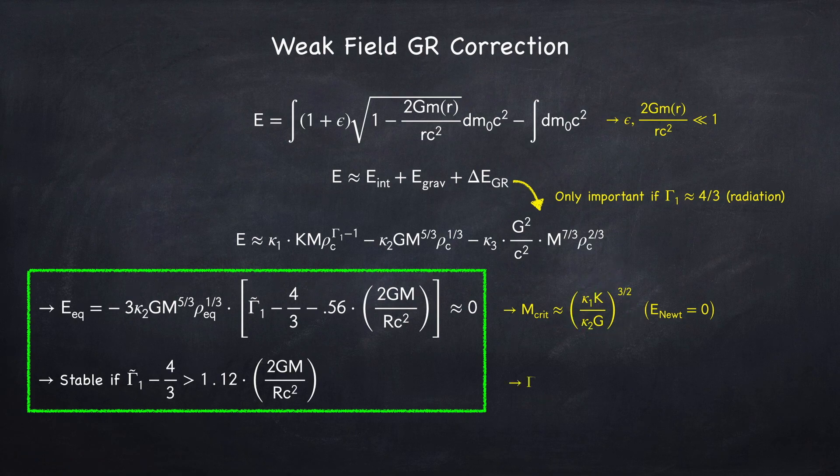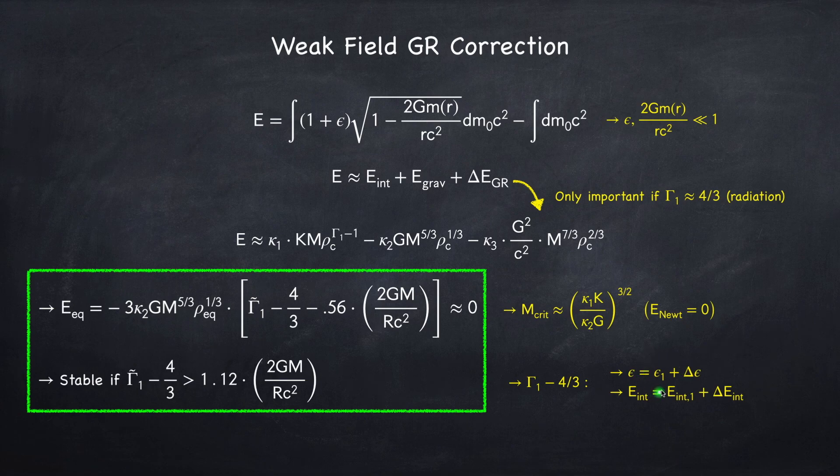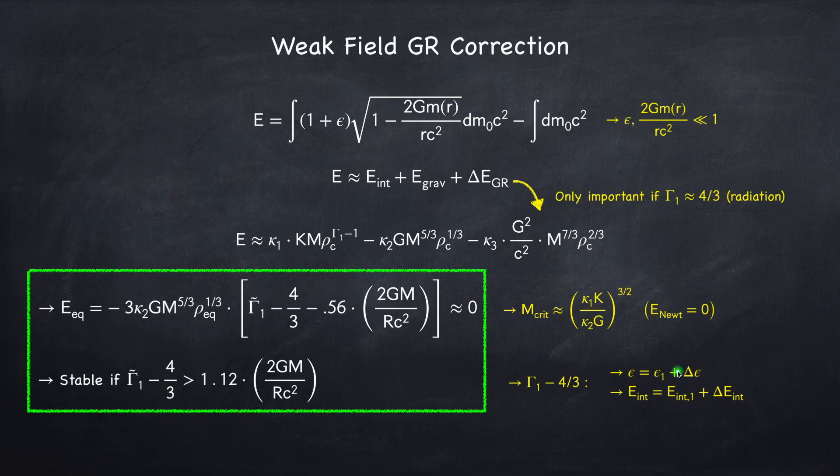As for gamma 1 minus 4 thirds, in order to find its exact value, we have to expand the internal energy into a first order term in which gamma is exactly 4 thirds, plus a correction due to the fact that there's a little bit of gas pressure. Recall gamma 1 equals 4 thirds means 100% radiation pressure.